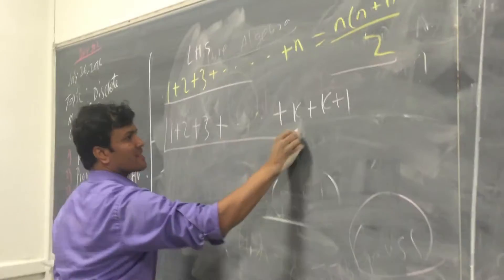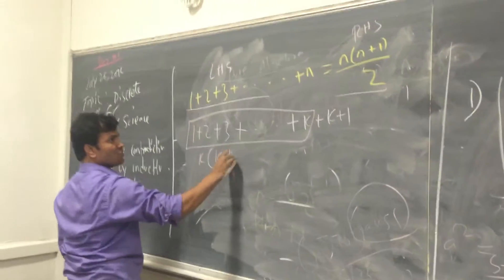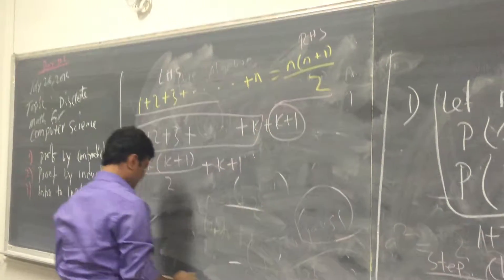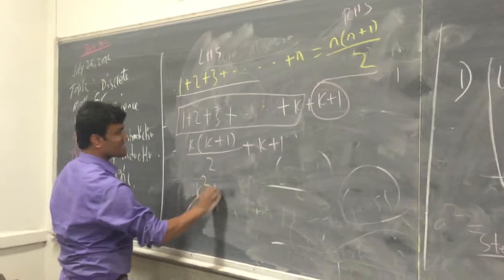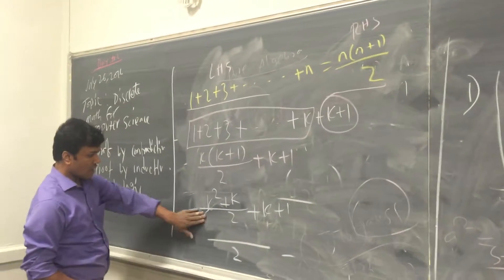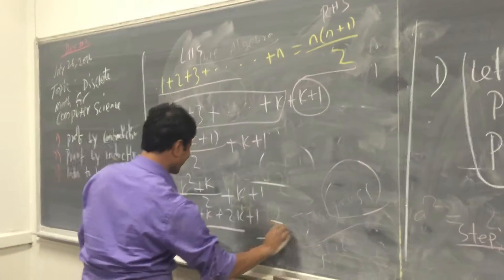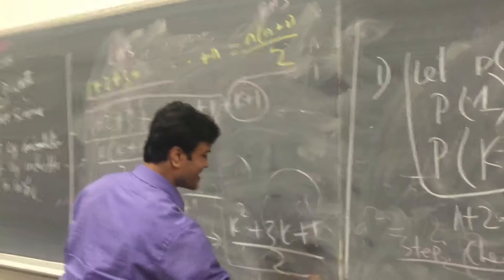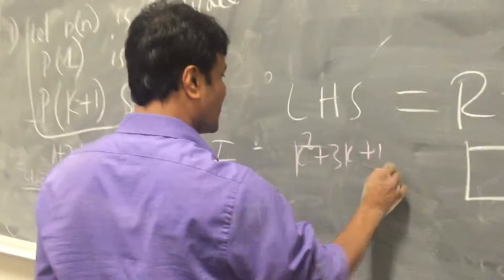We already know that 1 plus 2 plus dot dot dot plus k equals k times k plus 1 over 2, and the remaining term is k plus 1. So we distribute: k squared plus k over 2 plus k plus 1, which gives k squared plus k plus 2k plus 2 over 2, which is k squared plus 3k plus 2 over 2. So this is our left-hand side.